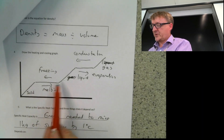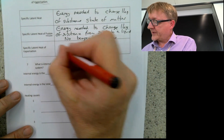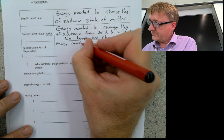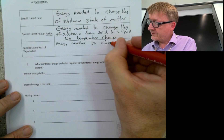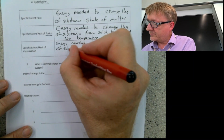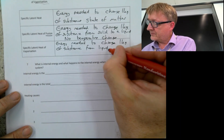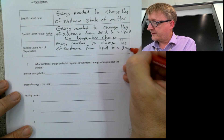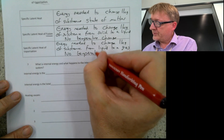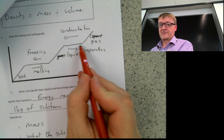So it goes from solid to liquid but there is no temperature change because the graph is flat. Specific latent heat of vaporization is the energy needed to change one kilogram of substance from a liquid to a gas, and again there is no temperature change. On the graph, that flat line there represents this.